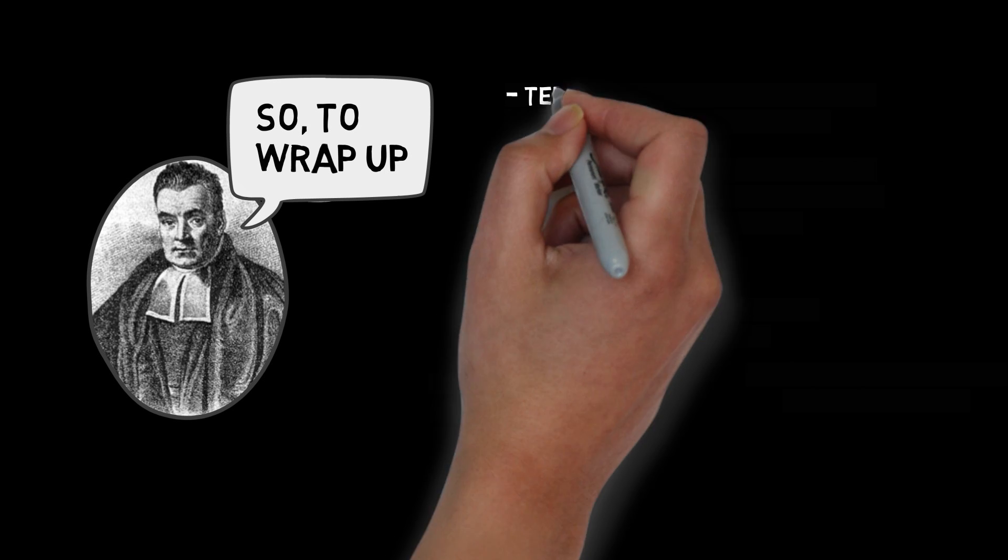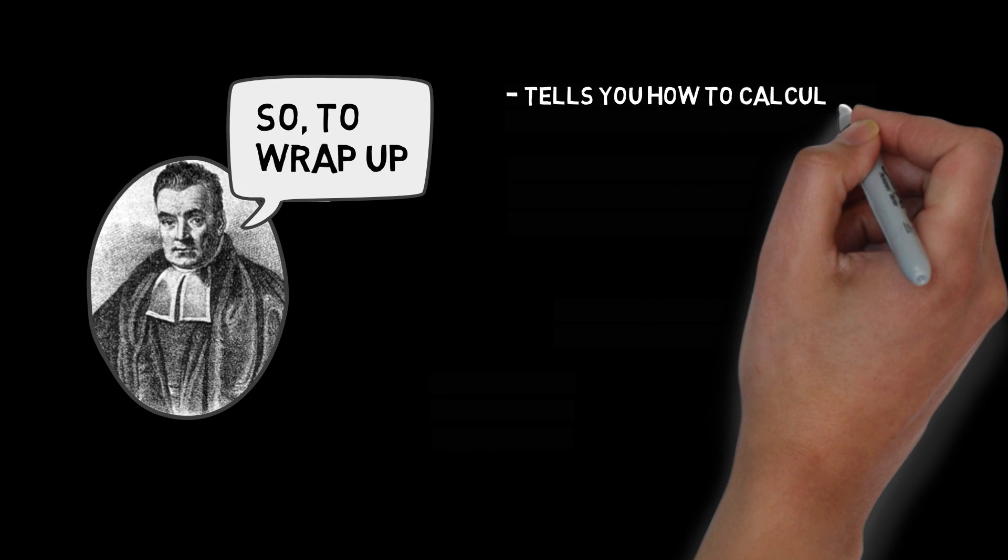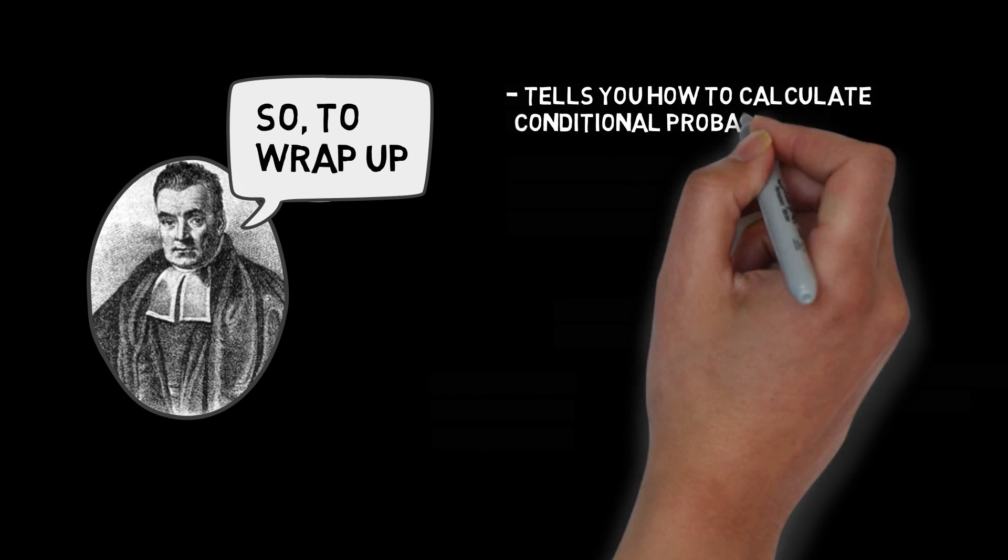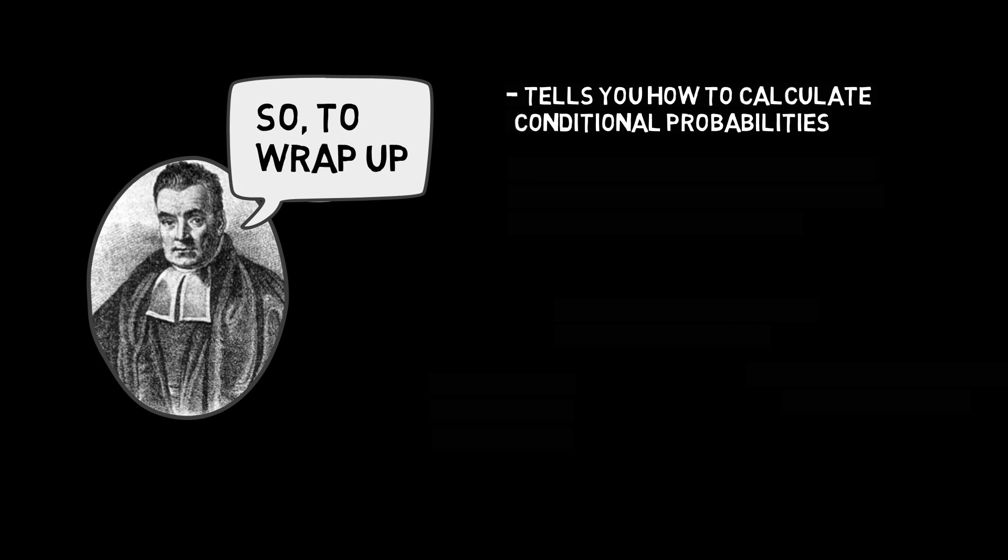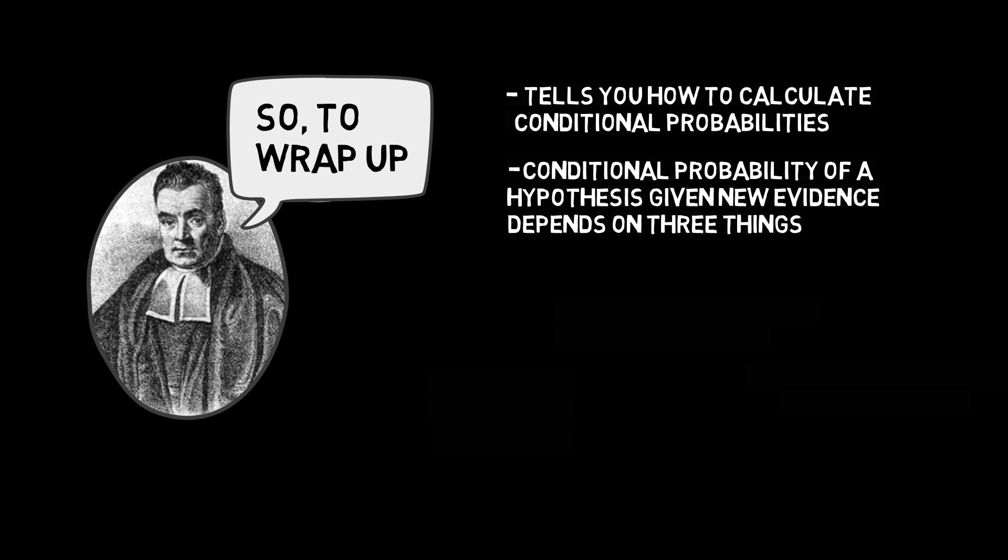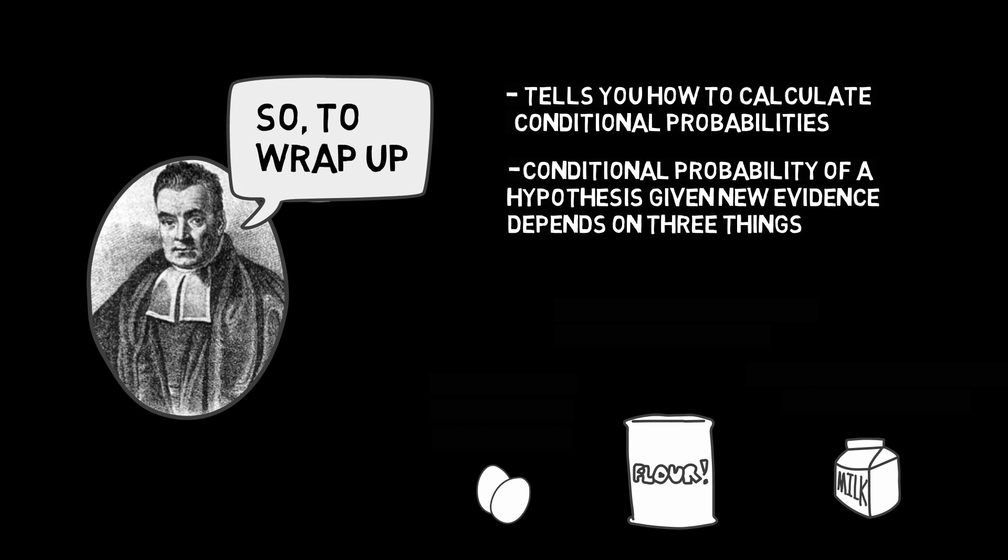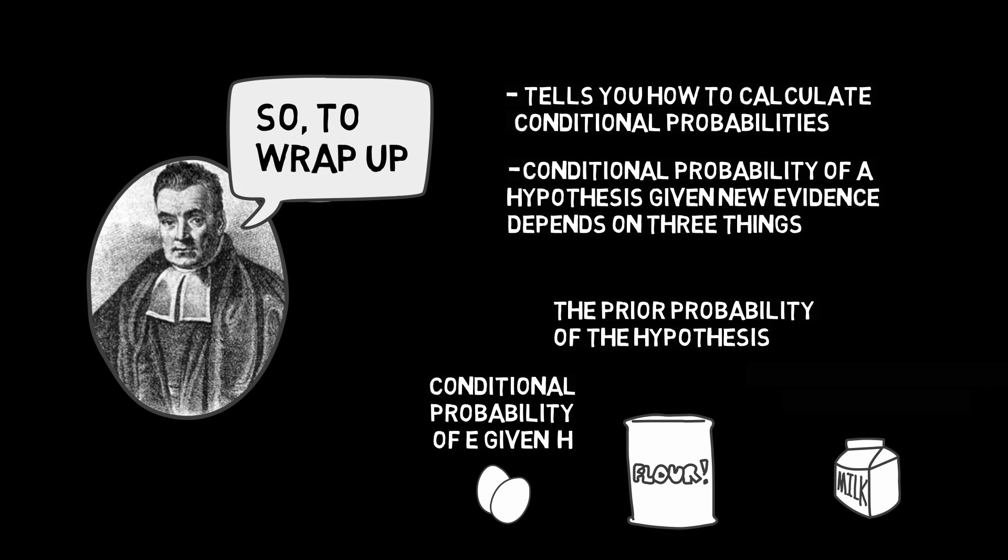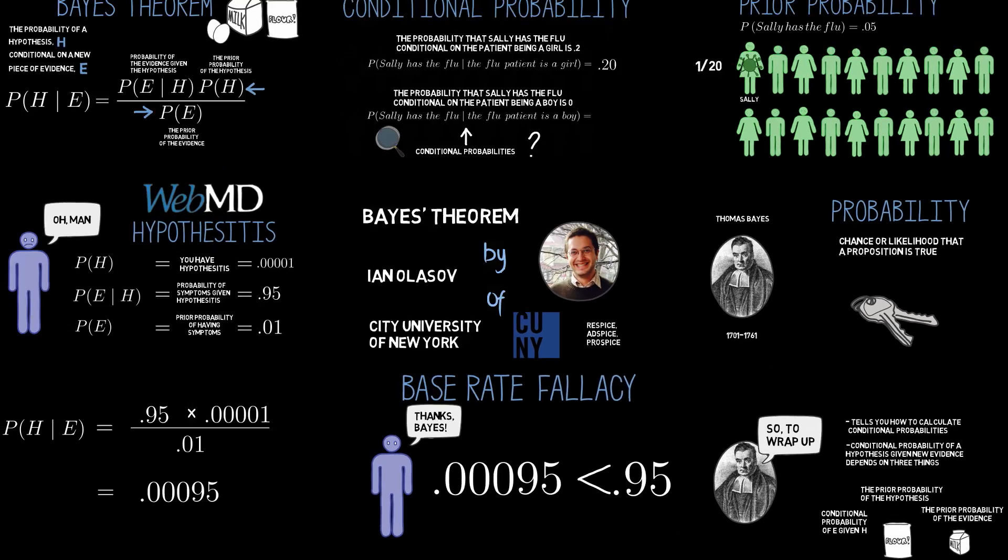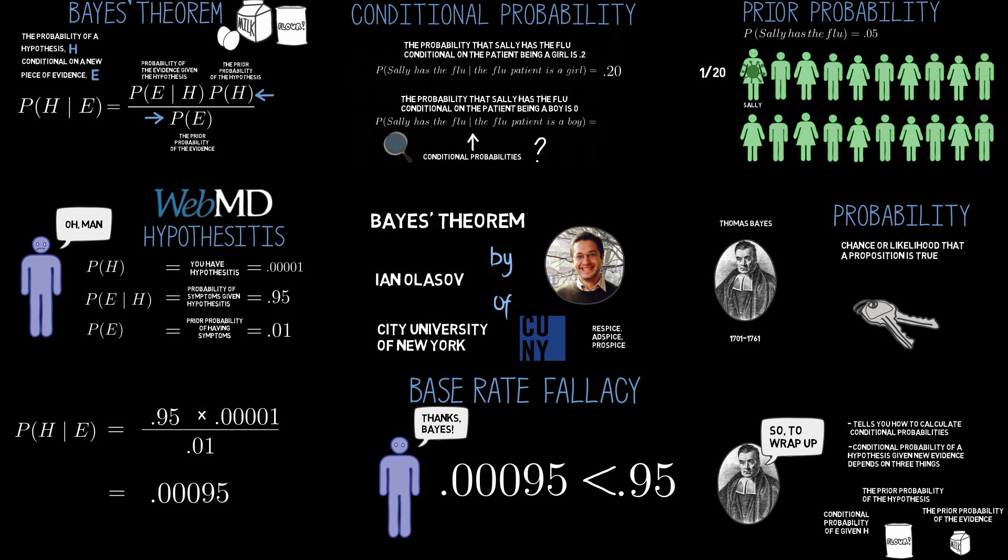Wrapping up then, Bayes' theorem is a formula that tells you how to calculate conditional probabilities, or the probability you should assign to some hypothesis given a piece of evidence. Even if you forget the formula, try to remember that the conditional probability of H given E is determined by three things: the conditional probability of E given H, the prior probability of H, and the prior probability of E. If you leave one of those three things out, you don't have a complete picture.